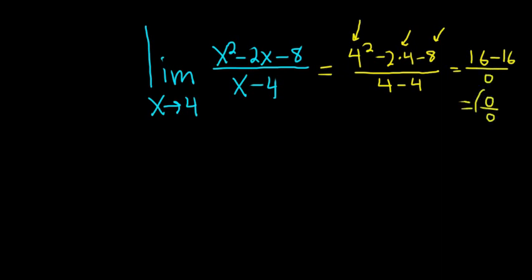So this is what's called an indeterminate form. So whenever you get something like this, you can use what's called L'Hopital's rule. L'Hopital's rule says that whenever you have something like 0 over 0 or infinity over infinity, and you're taking a limit...